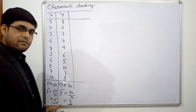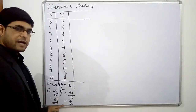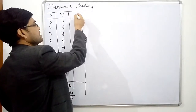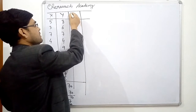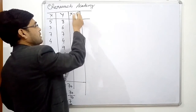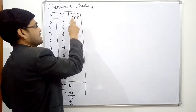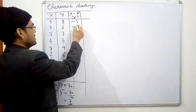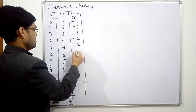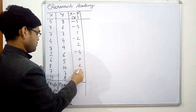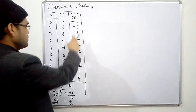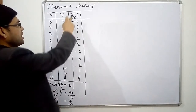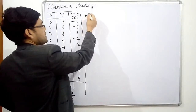We have to take the deviation from these actual means in both series. First we take the deviation from X, denoted as small x, which is x minus x̄. So: 5−6 = −1, 3−6 = −3, 7−6 = 1, 4−6 = −2, 8−6 = 2, then −2, 2, 1, and 4. These are the deviations from the actual mean x̄.